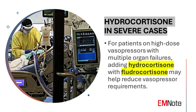Hydrocortisone in Severe Cases. For patients requiring high doses of vasopressors, such as norepinephrine-equivalent above 0.25 micrograms per kilogram per minute, and experiencing multiple organ failure, the addition of hydrocortisone with fludrocortisone may be beneficial. While the impact on overall mortality remains unclear, studies suggest that this combination can help reduce vasopressor requirements, potentially minimizing the risk of vasopressor-related complications.